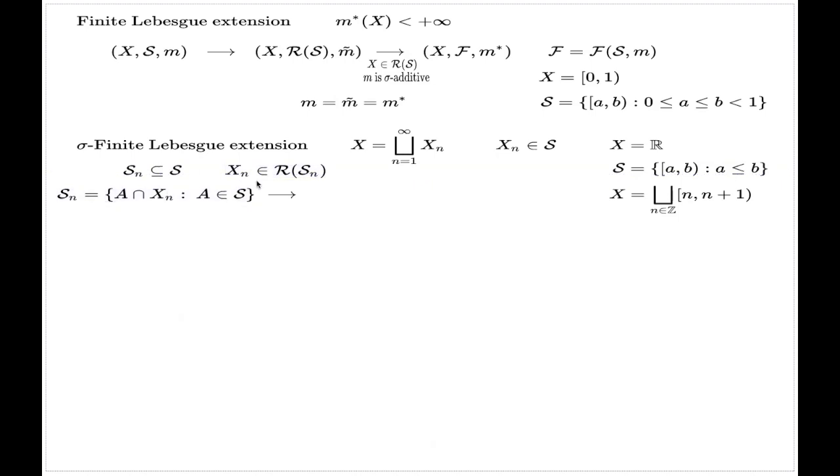We can do this finitely big extension for this smaller universal set, and I will denote this triple like this: the smaller universal set, the associated semi-algebra constructed according to this finite extension, and the associated external measure. In principle, it will be different external measures for different universal sets.